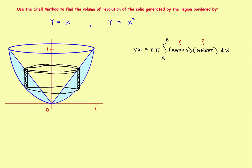Now I need to know the radius and the height — that's basically the whole problem. The radius is just the distance from the axis you're rotating around to the edge of the shell. In this case, the radius is just the x-distance, because it's parallel to the x-axis. So the radius is equal to x. That part was pretty easy.